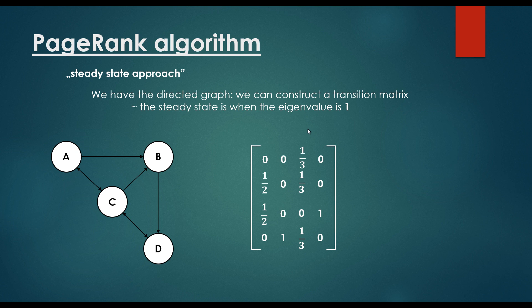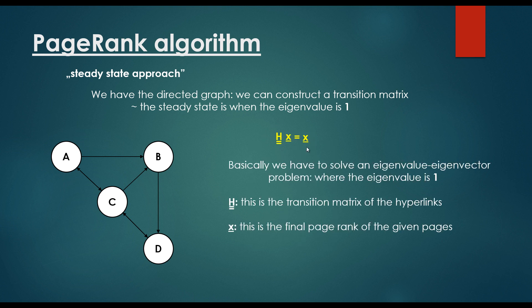So we just have to solve an eigenvalue eigenvector problem, so basically this equation, as you can see here, the eigenvalue is equals to 1, and the solution vector, this x, is going to store the eigenvector of this system, which is going to represent the page ranks according to the websites. So basically, we have to solve an eigenvalue eigenvector problem, where the eigenvalue is equals to 1, this is the equation of course.